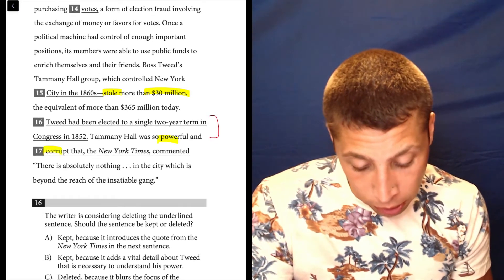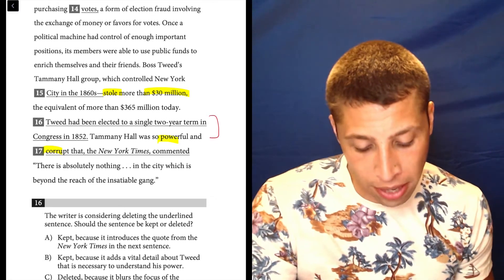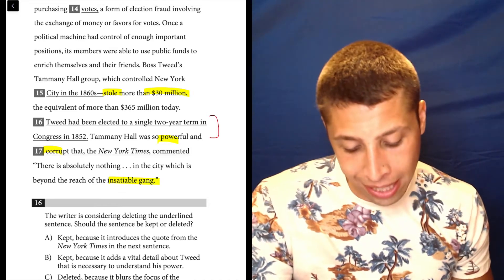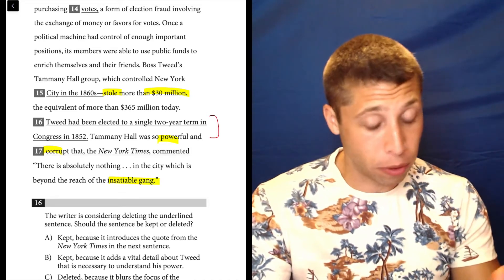Tammany Hall was so powerful and corrupt, the New York Times commented, there's absolutely nothing in the city which is beyond the reach of the insatiable gang. So it seems to be dealing with corruption.